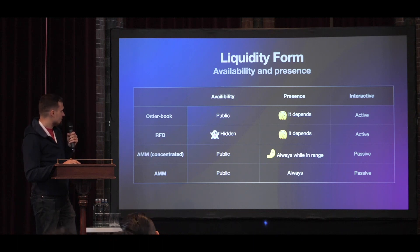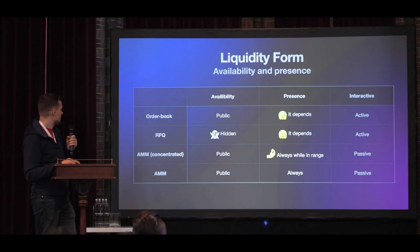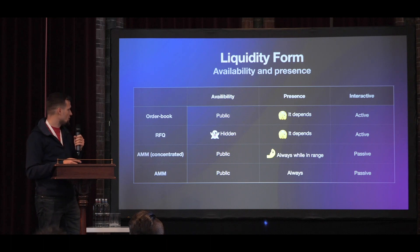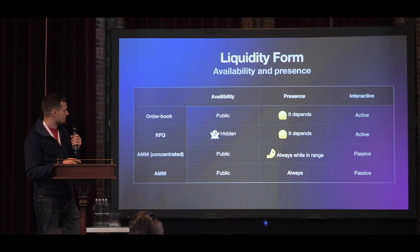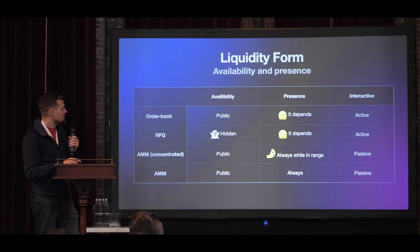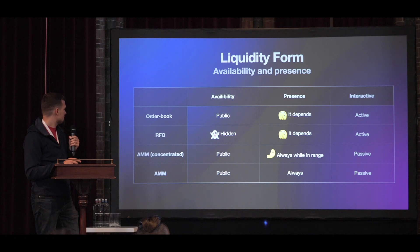Looking at availability, most of these are public except RFQ. RFQ is a request-for-quote system where you ask someone to give you a quote and they can give you a quote or not. For order book and RFQ, providers need to do some work to make their liquidity available for traders. But for AMMs, liquidity is always available automatically.